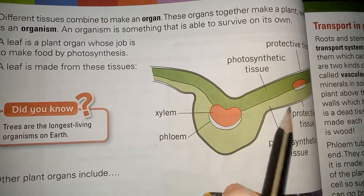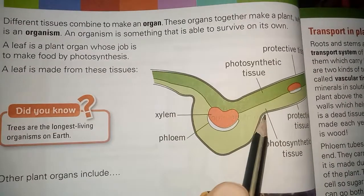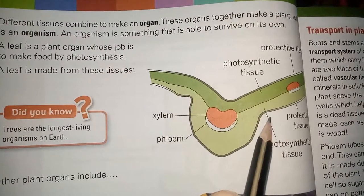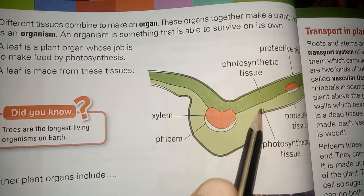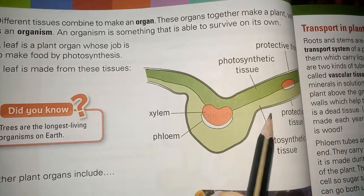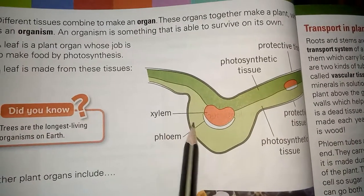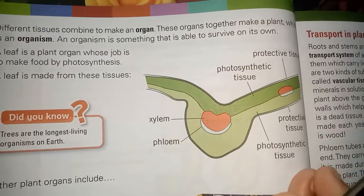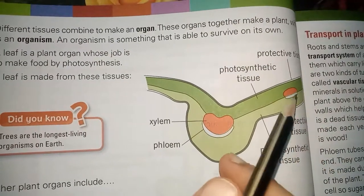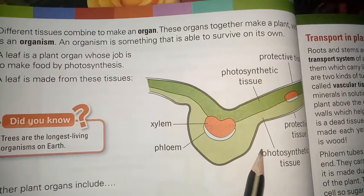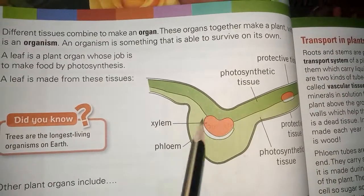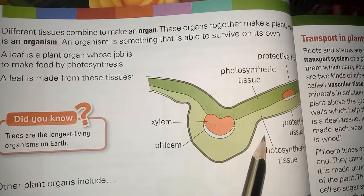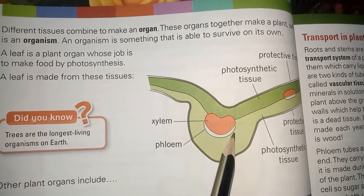For example, if we talk about the leaf, which is an organ of the plant, the leaf contains photosynthetic tissues, xylem tissues, phloem tissues, and protective tissues. So these four types of tissues are basically present in the leaf.